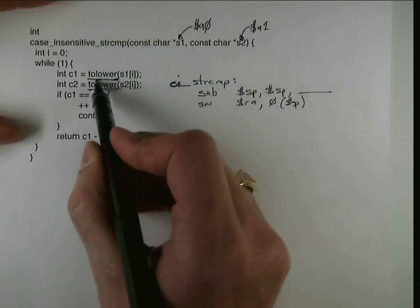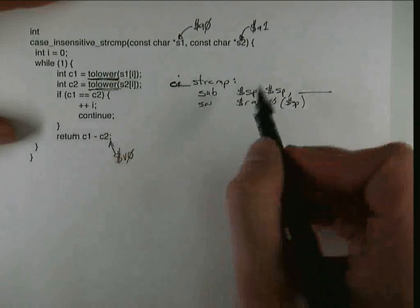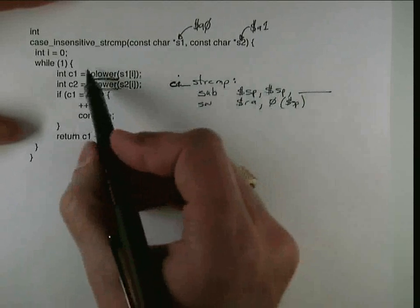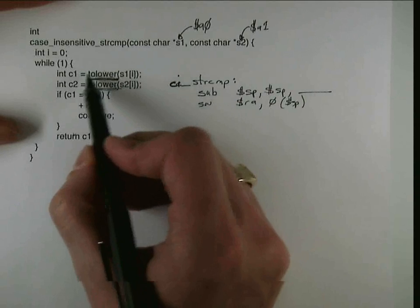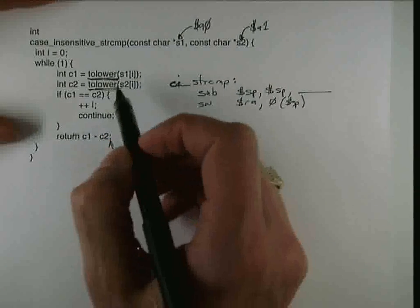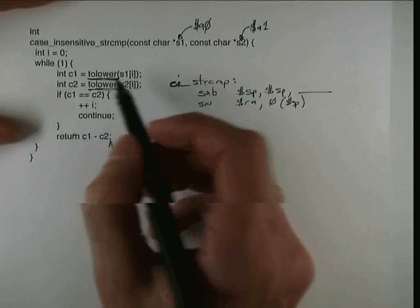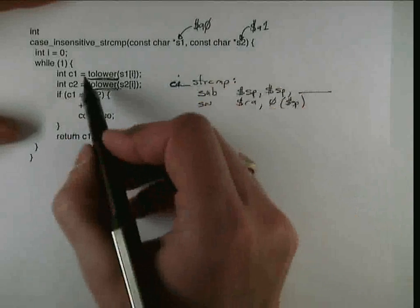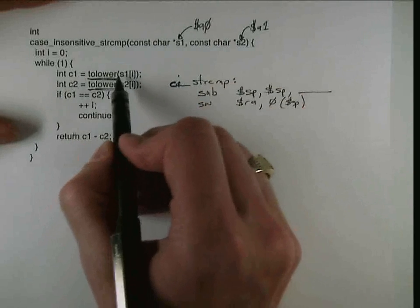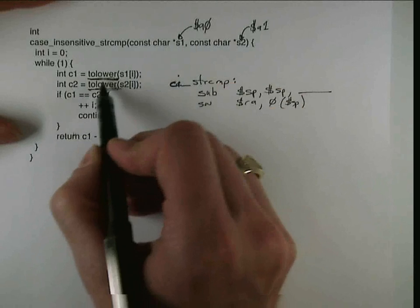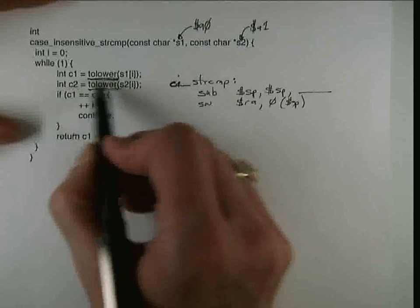Because especially in the case of using caller saved registers, anything that we want live after a call we need to have saved. And so if we look at this code,